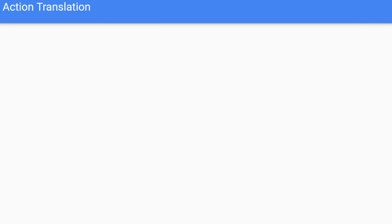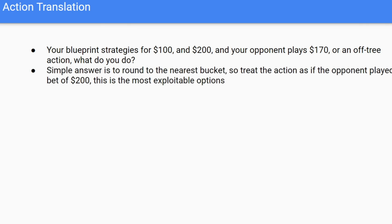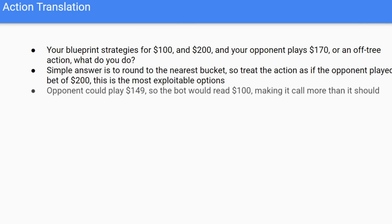The next topic is action translation. This is when we have a blueprint strategy for bet increments of $100, and our opponent plays an off-tree action — for example, we only have strategies for bets of $100 and $200, and the opponent plays $170. The simple answer is just round to the nearest bucket, so a bet of $170 is treated the same as $200. But this can be exploited: an opponent can bet $149, the bot rounds down to $100, meaning the opponent effectively plays a bet more than they should. This was done in poker competitions where people would purposely bet slightly below minimum thresholds to extract value from bots.